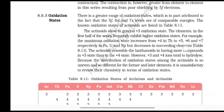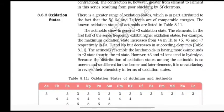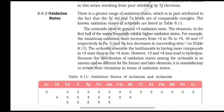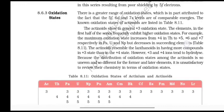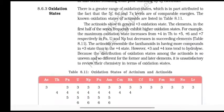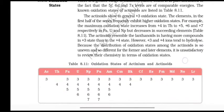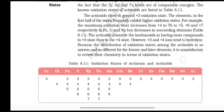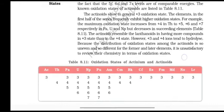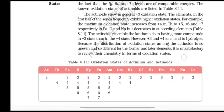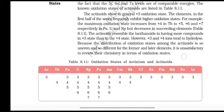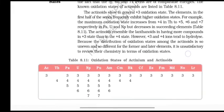Oxidation states. There is a greater range of oxidation states, which is in part attributed to the fact that 5f, 6d, and 7s levels are of comparable energies. The known oxidation states of actinoids are listed in the table. The actinoids show in general +3 oxidation state. The elements in the first half of the series frequently exhibit higher oxidation states. For example, the maximum oxidation state increases from +4 in thorium to +5, +6, and +7 respectively in Pa, U, and Np, but decreases in succeeding elements.